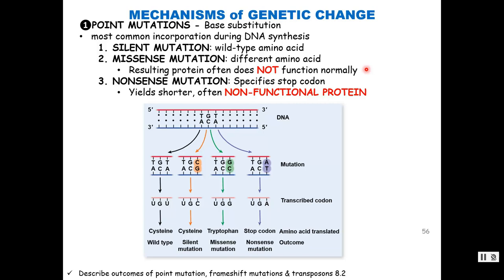One base pair substitution is what occurs in sickle cell anemia — just one base pair change and you get a hemoglobin molecule that does not function normally. The last type of point mutation is nonsense. If we change the base from an A to a T, we get UGA — one of our stop codons. Now we prematurely stop that transcript, ending up with a very short, often non-functional protein.